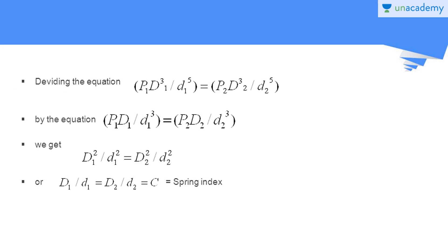Dividing the equation P₁D₁³ / d₁⁵ = P₂D₂³ / d₂⁵ by the equation P₁D₁ / d₁³ = P₂D₂ / d₂³, we get D₁² / d₁² equals D₂² / d₂². This means D₁/d₁ equals D₂/d₂, which equals c, the spring index of the helical springs. We conclude that the spring index of both springs in the concentric arrangement is equal.